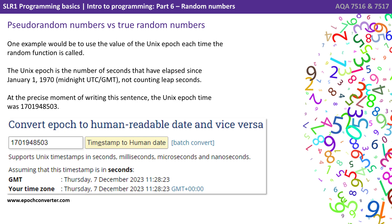One example would be to use the value of the Unix epochs time, each time the function is called. The Unix epochs is the number of seconds that has elapsed since January 1st 1970 at midnight GMT, not counting leap seconds. At the precise moment of writing this sentence, the Unix epochs time was as shown on the screen now.